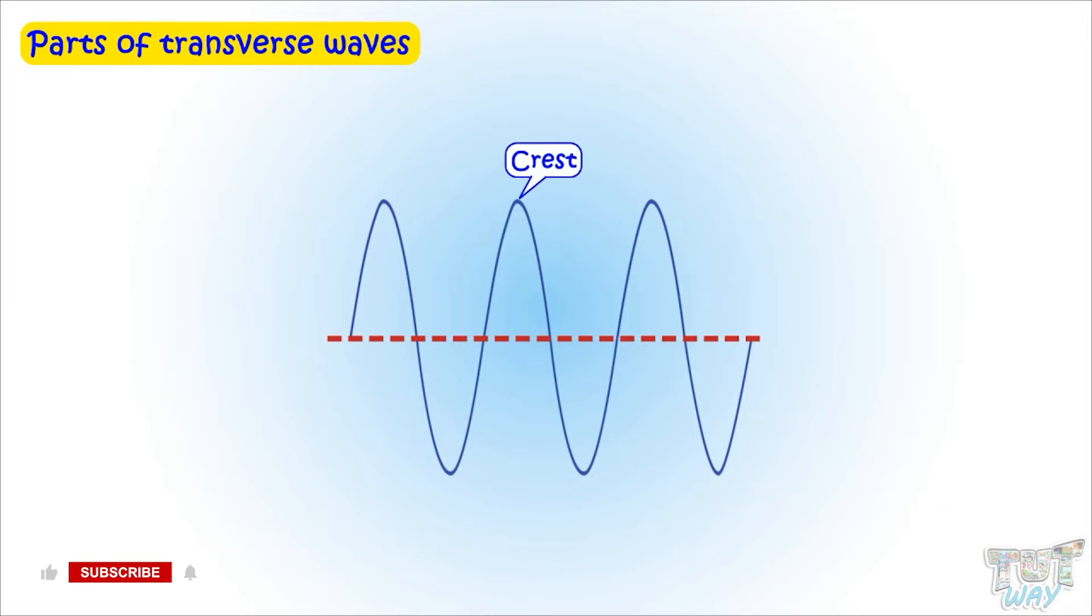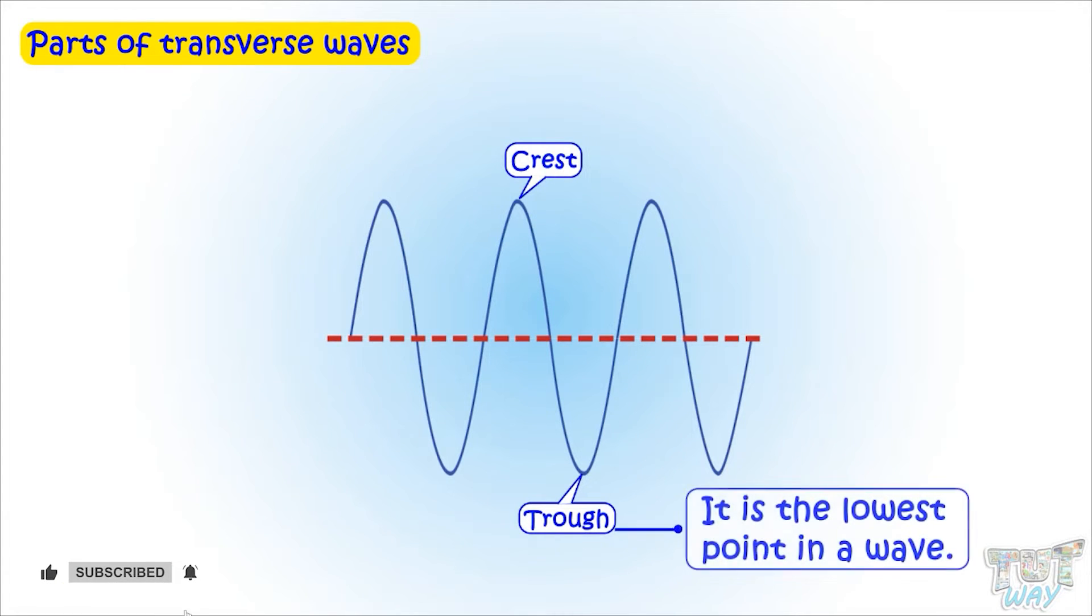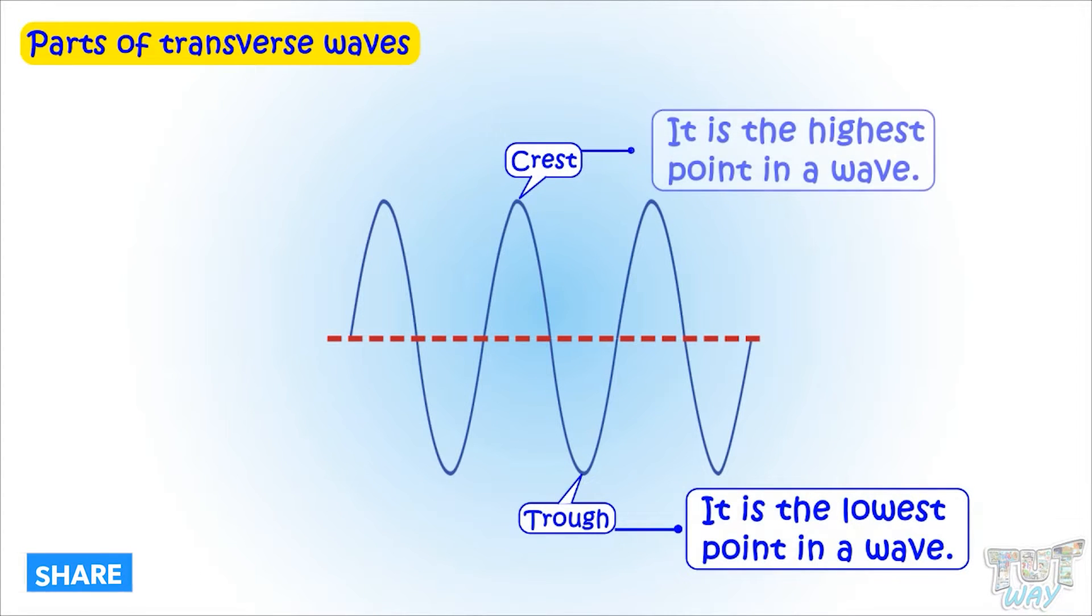Next part of the wave are crests and troughs. Trough is the lowest point in a wave. Crest is the highest point in a wave. In this wave, we have three crests and three troughs.